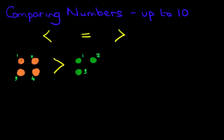Now how do we remember which symbol to use? The way I tend to do it is to see which way the arrow is pointing. It is pointing to the smaller number. And in this case it is pointing to three apples.